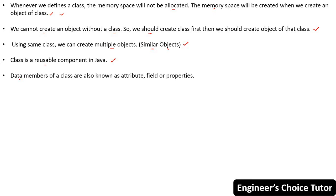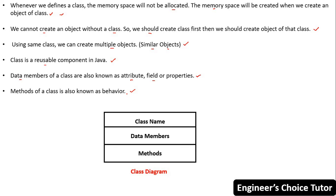The data members of a class are also known as attributes, fields, or properties. The methods of a class are also known as behavior. Every class in Java will be represented in the form of a class diagram. The class diagram has three partitions: the first partition provides information about the class name, the second partition provides information about the data members, and the third partition provides information about the methods.